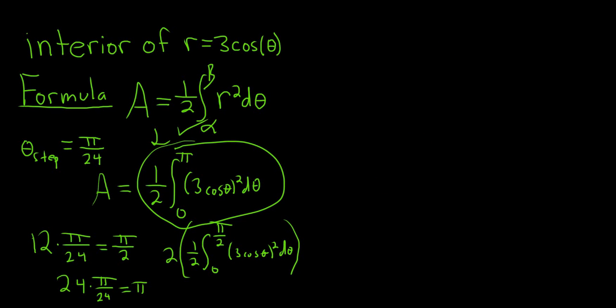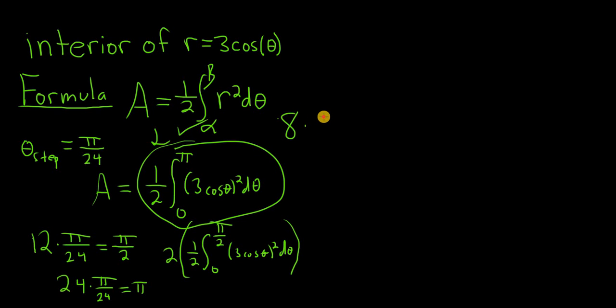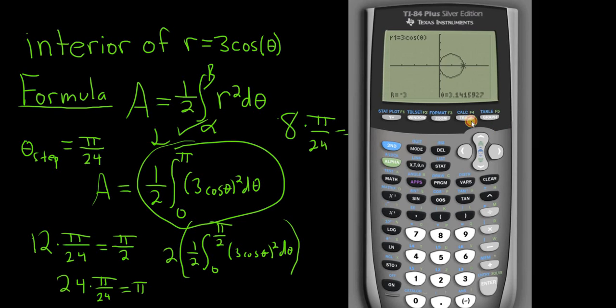So you might be wondering what is the point of this? Why would you have to do it this way? Again, it has to do with flexibility and versatility. If you have like the petal of a rose, you can just count and say you have 8 tick marks. So if you have 8 tick marks, if you click it 8 times, then you've traveled 8 times pi over 24. So you've traveled pi over 3. So you go from 0 to pi over 3. So all you do is you graph your polar graph, you hit trace, and you just start counting. And it's just a super cheap way of being able to find the limits of integration.